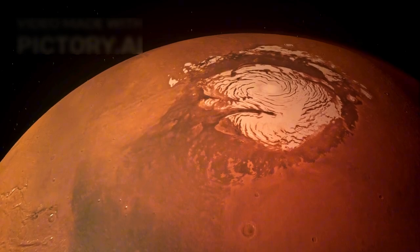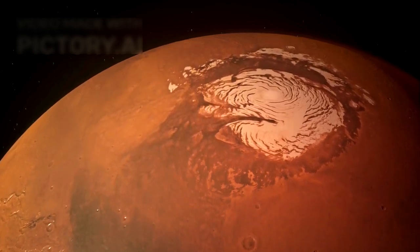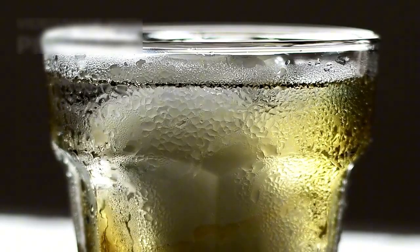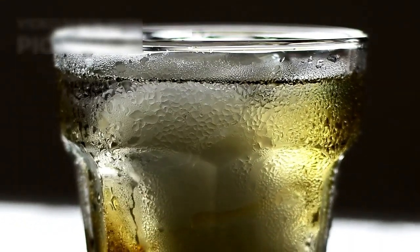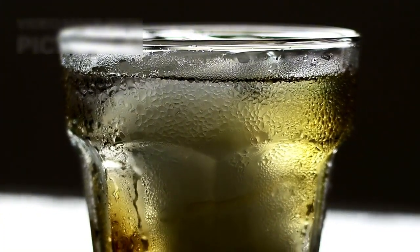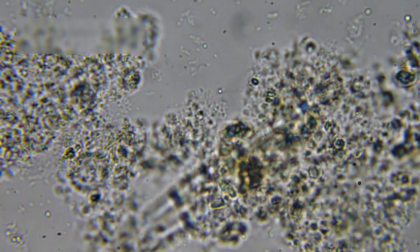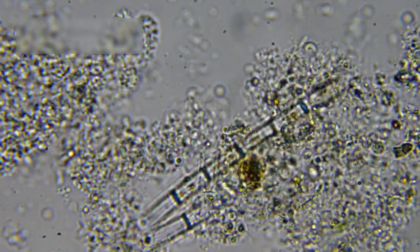Webb's data detected water ice in the terminator zone, where light meets darkness. There, in that shifting band, the ice could melt and refreeze, offering a dynamic liquid cycle. Such a cycle could allow microbial life to flourish just beneath the surface.